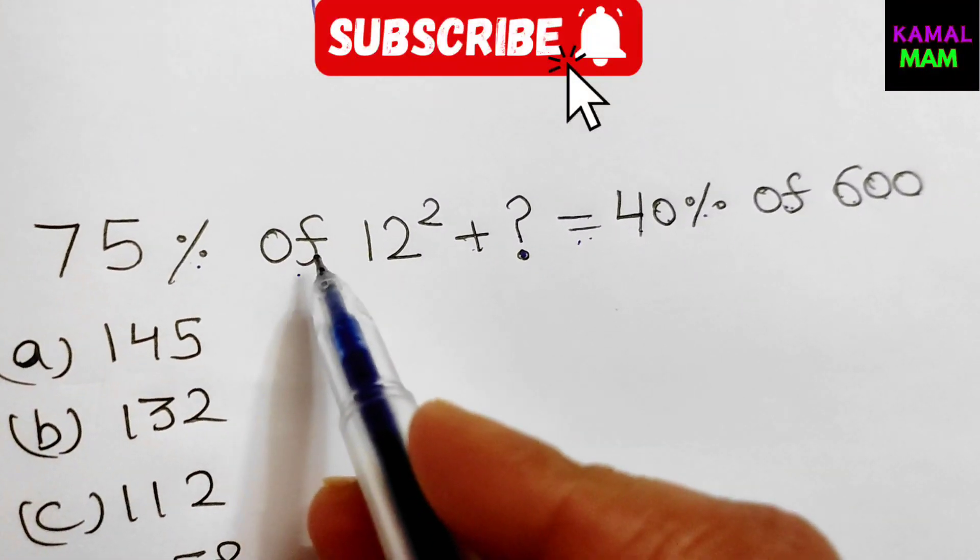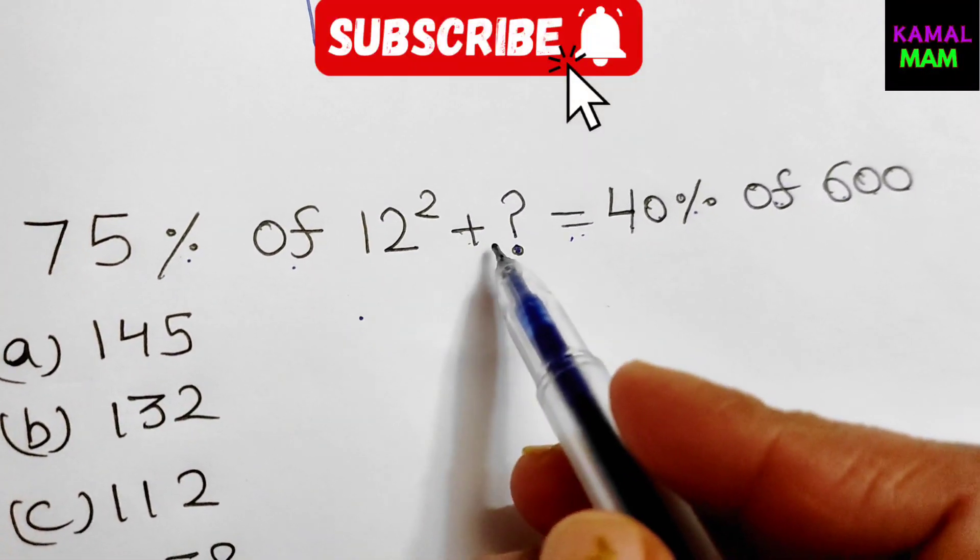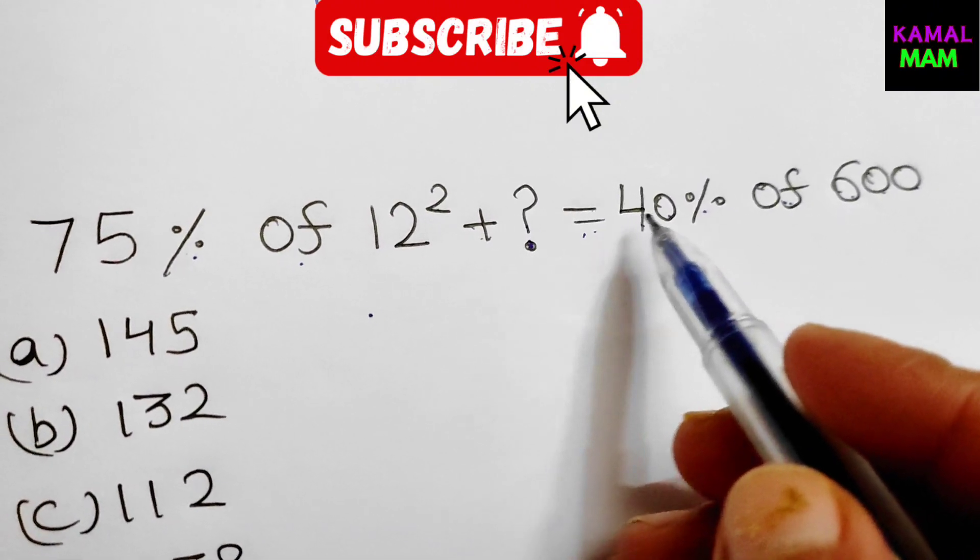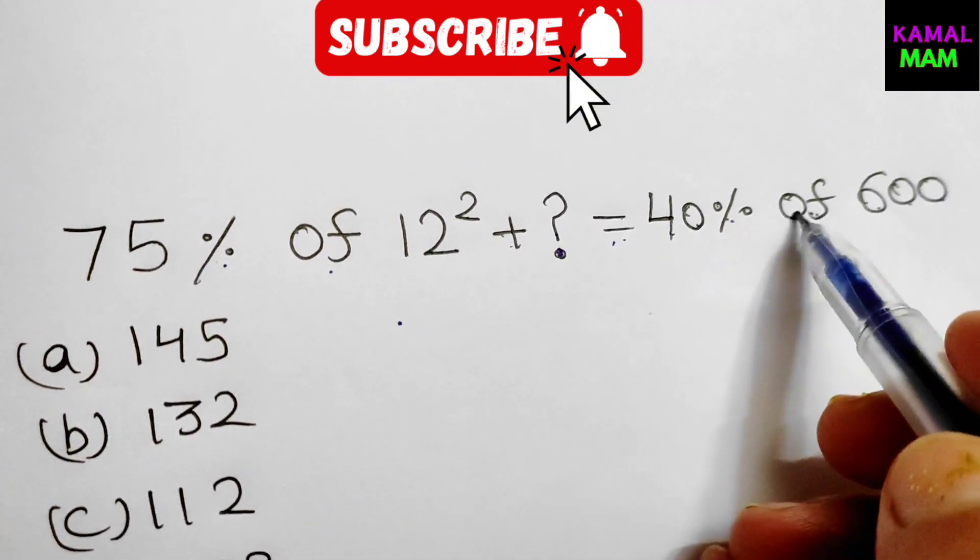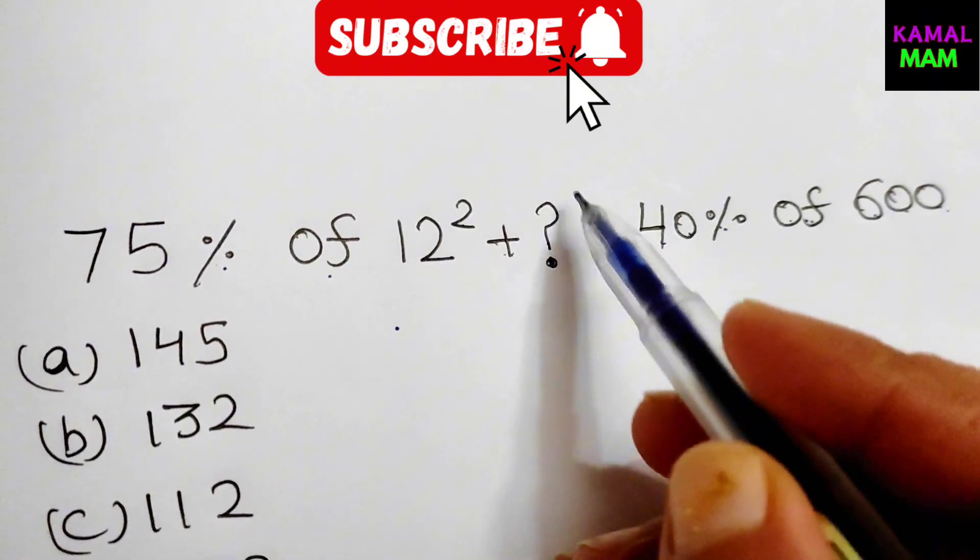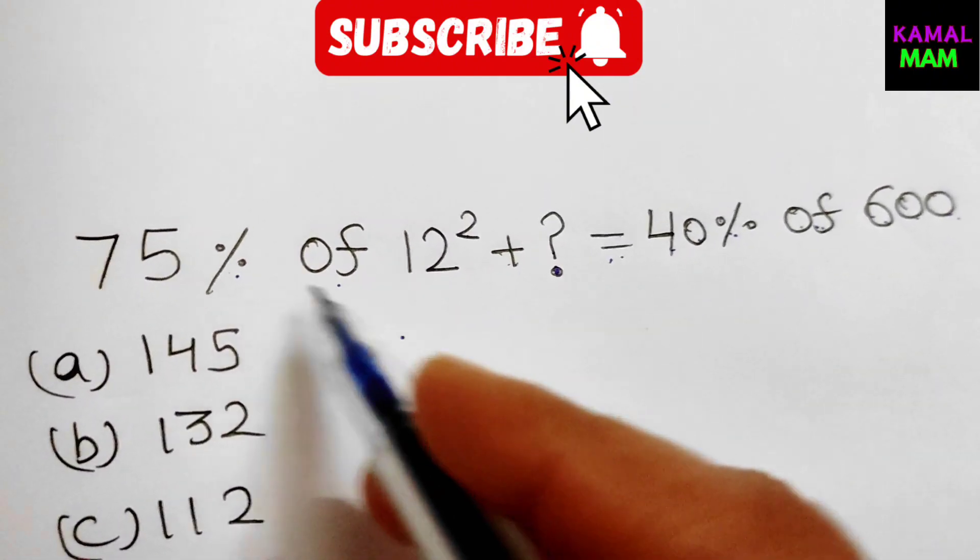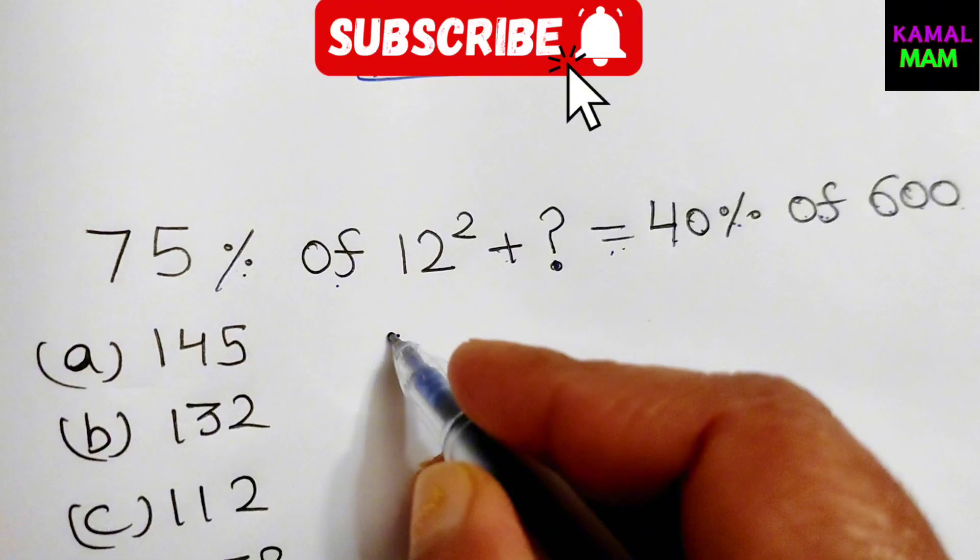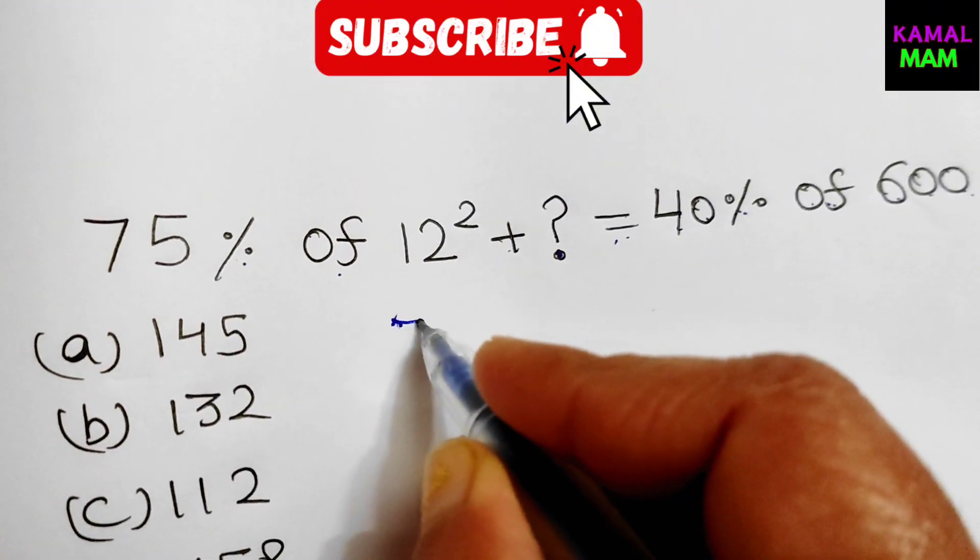75 percent of 12 whole square plus question mark equals 40 percent of 600. So we have to find the value of the question mark here. We can also write it as 75 percent, it's 75 divided by 100. We can change the statement into the equation here.